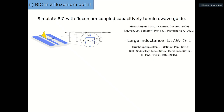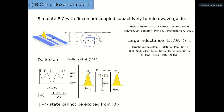The system we have been working on is a coplanar waveguide capacitively coupled to a fluxonium. The fluxonium has a large inductance array, as described this morning. For the fluxonium at zero external magnetic flux, the potential energy has three wells, and we can label the states as zero, minus one, and plus one. We are interested in keeping these three states — the qutrit.